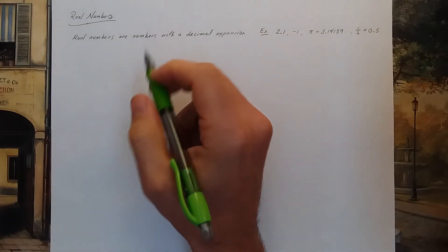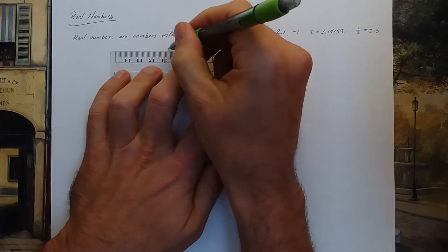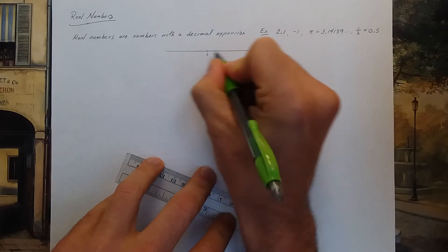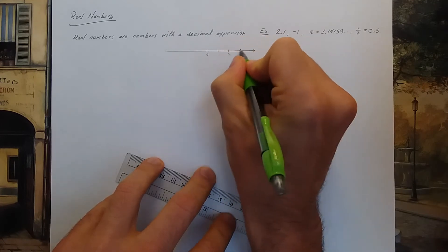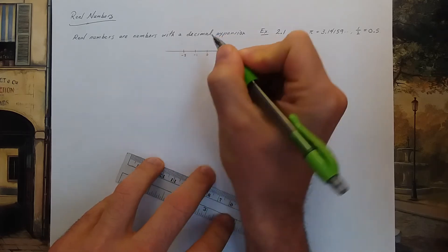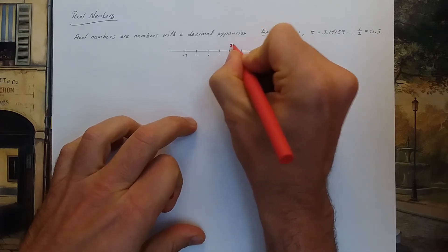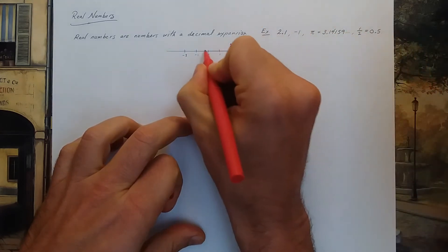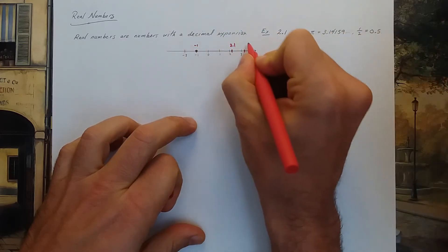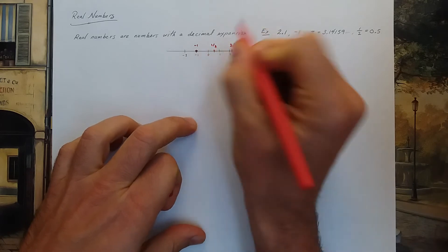Now, real numbers can be plotted on a number line. Here's a number line. There's 0, 1, 2, 3, negative 1, negative 2. 2.1 is about here. Negative 1 is here. Pi is here, just past 3, and here is one half.